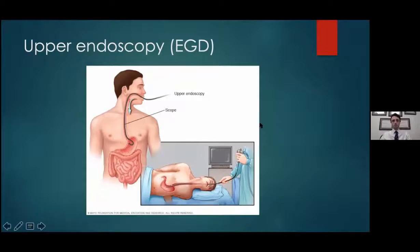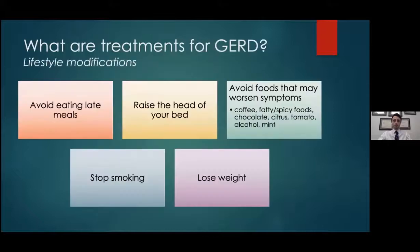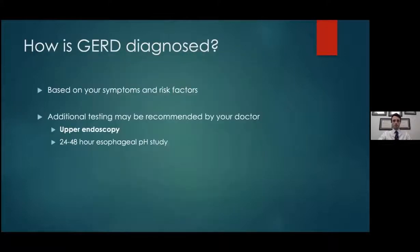The endoscopy is a quick procedure — about five to ten minutes — done either in the office or a surgical center. Since you get anesthesia, you'd need someone to pick you up, but you'd be able to leave after an hour or two. It's an outpatient procedure, very safe, very routine. Sometimes we also measure acid exposure using a pH study to quantify the acid level in the lower esophagus, though that's less common.